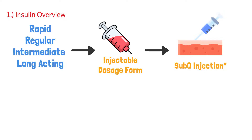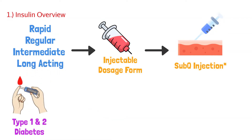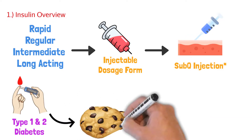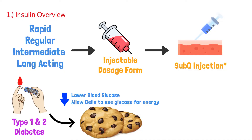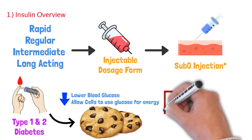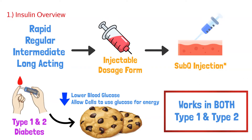Insulin is used for both type 1 and type 2 diabetes. Anytime we use insulin, we want it to do two things: lower blood glucose levels in these patients, and allow the cells to use that glucose for energy. In general, insulin is used for both type 1 and type 2 diabetes medication management.